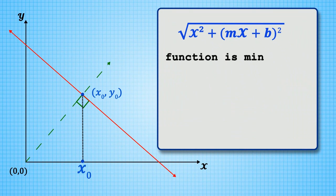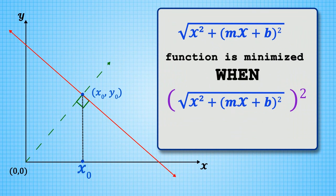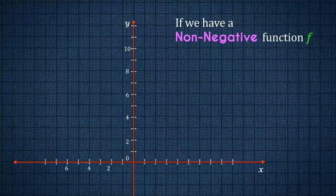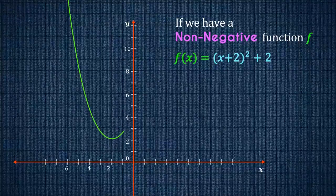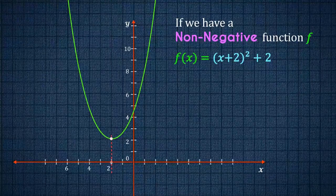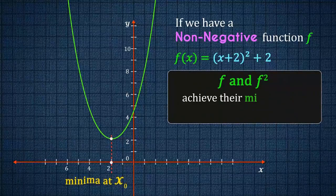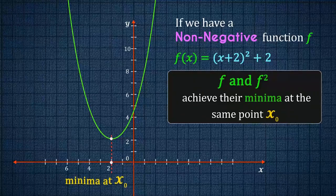This function is minimized when the square is minimized. Precisely, if we have a non-negative function f, then f and f squared achieve their minima at the same point x0.